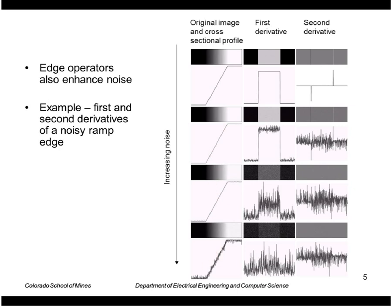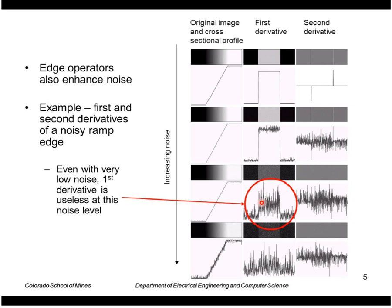But it has dramatic effects on the derivative results. So the first derivative, you can see quite a bit of noise caused by this additive noise here. Very much noise here even though there's very little noise in the original image. Even with a low level of noise, this result is pretty much useless of the first derivative.